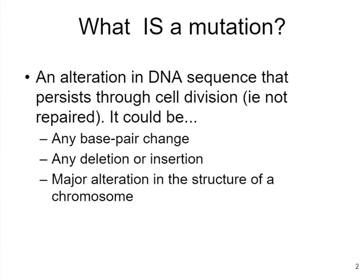A mutation means an alteration in DNA sequence that persists through cell division — in other words, it is not repaired. So in order to have a mutation, you have to have two things happen: something has to change in the DNA, and then that change needs to persist through cell division and become fixed in that cell lineage. This could be any base pair change, any deletion or insertion of DNA, or even a major alteration in chromosome structure like a translocation event.